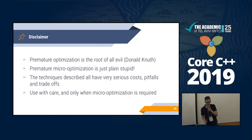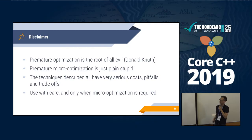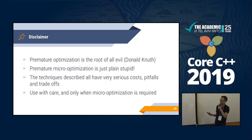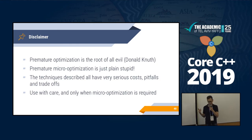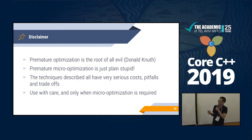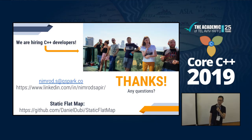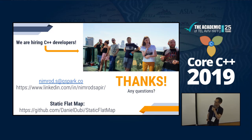I'll end with a small disclaimer: you already know that premature optimization is the root of all evil — that's Donald Knuth — but premature micro-optimization is plain stupid. Use every method shown here with care: each one has serious costs — harder to debug, harder to implement, pitfalls, hidden bugs. Only apply these when you truly think that micro-optimization is needed. We are hiring in Tel Aviv, so if you know any C++ developer looking for a job, here is my email and LinkedIn address, and again the link to the static flat map.